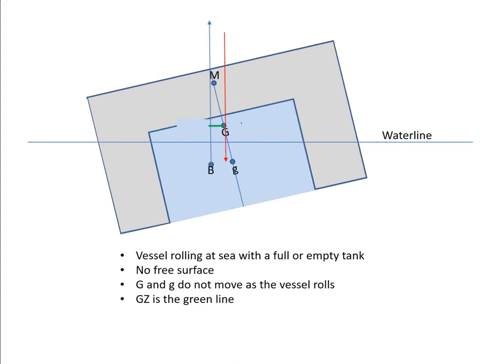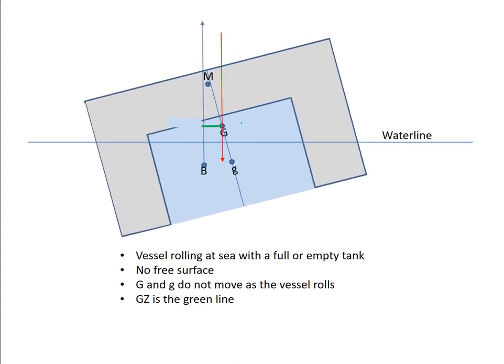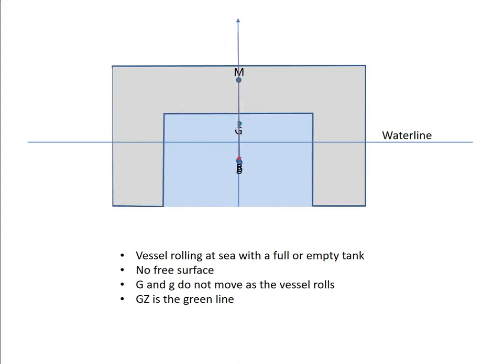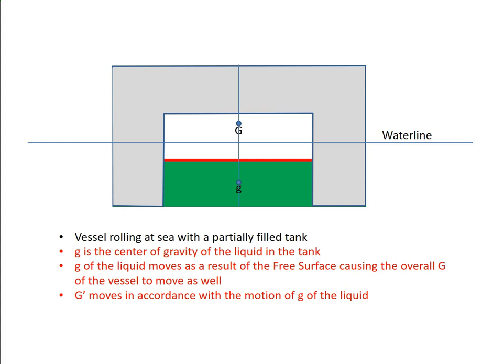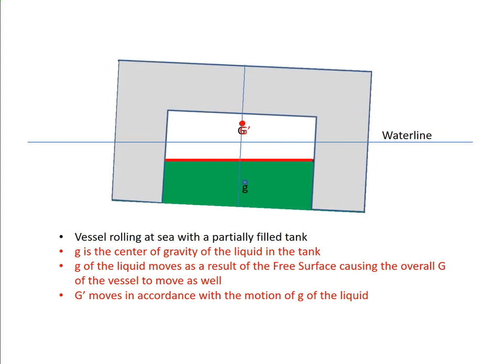You can see the vessel rolling to the port side, gz increasing and decreasing. This is an image right from your book that explains what's going on with the virtual center of gravity and off-center weight. We're going to construct this slide with animation step by step. Here's a tank that is slack — not full and not empty. Because of that, the surface is going to be free to move. This is the overall center of gravity of the vessel and this is the center of gravity of this one particular tank, which is on the centerline since the liquid is equally distributed.